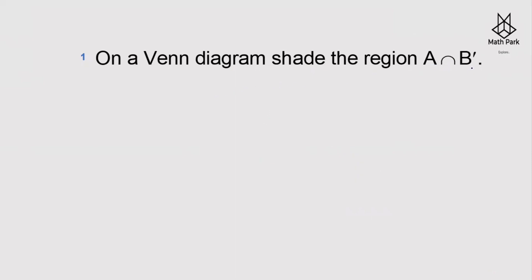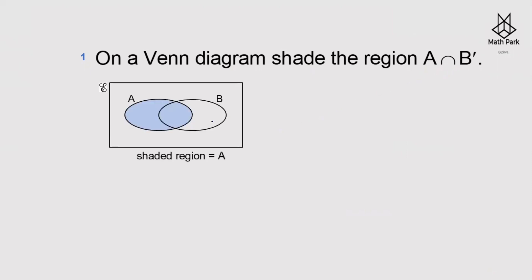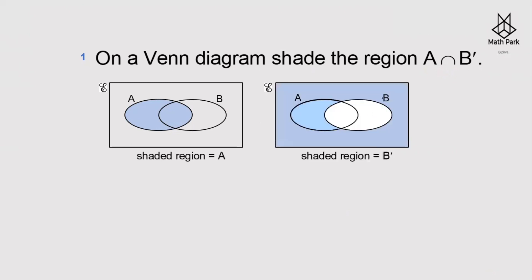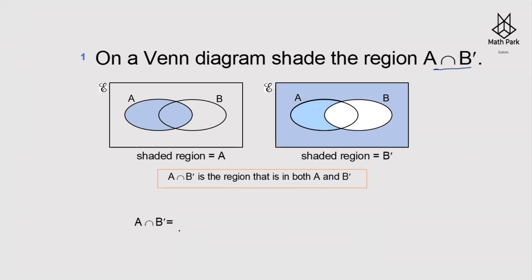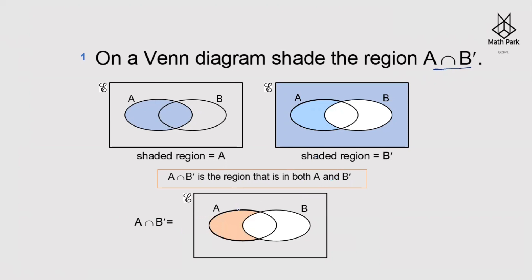Now let us take some questions on Venn diagrams. Shade the region A∩B'. The shaded region shows A. B complement (B') is everything not in B — except B, the rest is B complement. A∩B' is the region that is both in A and in B complement — the part of A that is outside B.